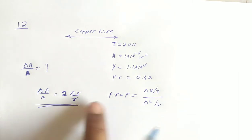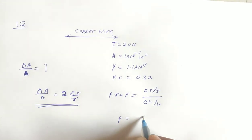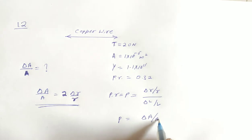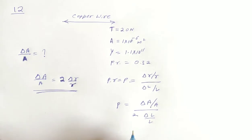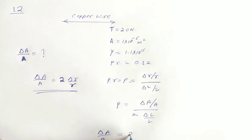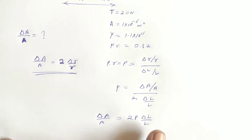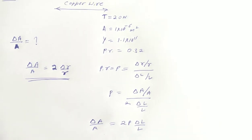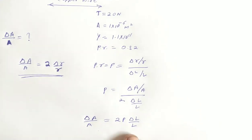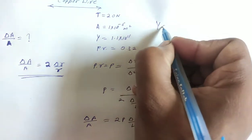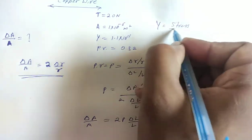Okay. So here we have delta A by A upon 2. So Poisson ratio is equal to delta A by A upon 2, and this upon A upon 2.